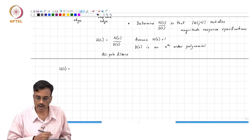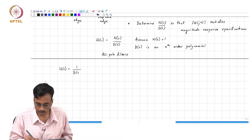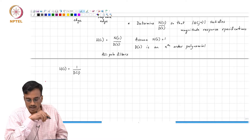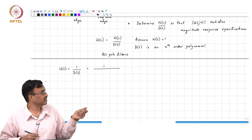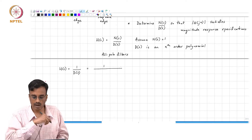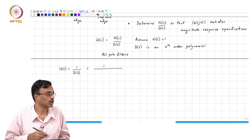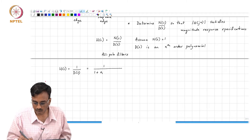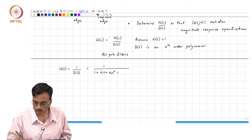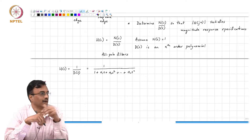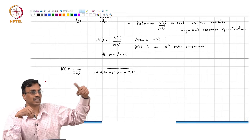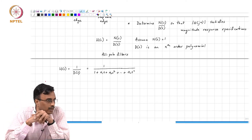Our problem is now simplified to saying H of s is 1 over D of s. D of s is basically an nth order polynomial, and if we want the DC gain to be 1, this must be 1 plus A1·s plus A2·s² all the way up to An·s^n. Mathematically, our problem boils down to how do we determine A1 through An so that the magnitude response of this transfer function satisfies some spec.